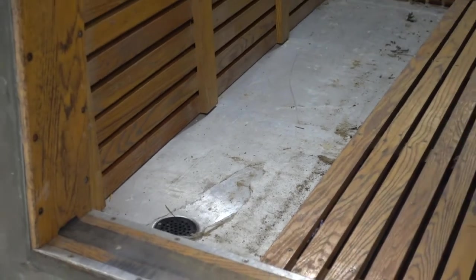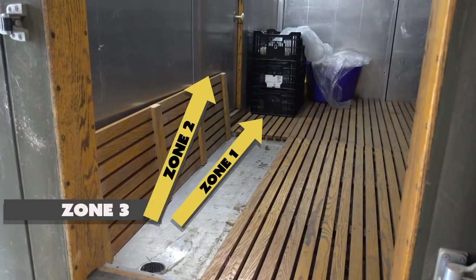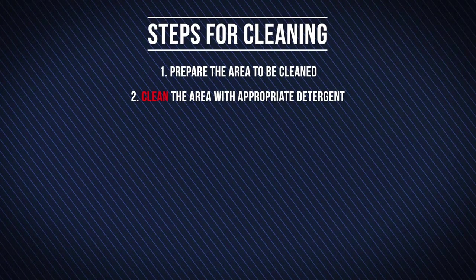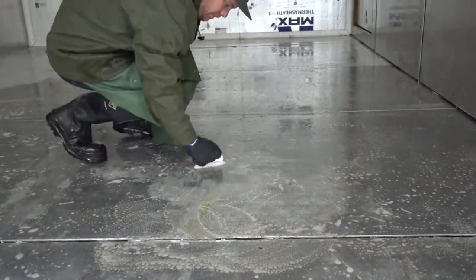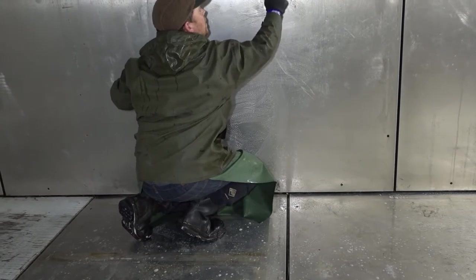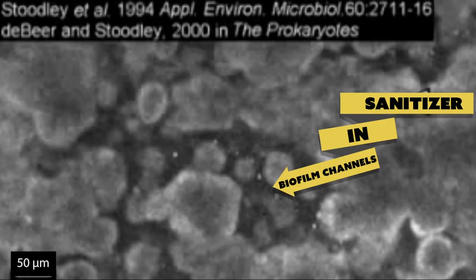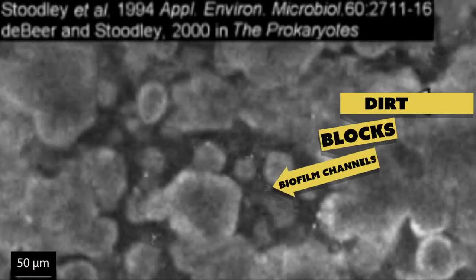Hose spray may facilitate dispersal of listeria from zone 3 surfaces to zones 2 and 1. Clean the area with appropriate detergent. Use detergent to remove caked-on debris, soil, and grease using a brush or other physical tool. This can also aid in removing biofilms. If you are sanitizing any surfaces, you must first clean the surface before proceeding with sanitizing steps, since organic material like dirt and grease will interfere with the sanitizer's ability to kill microbes.